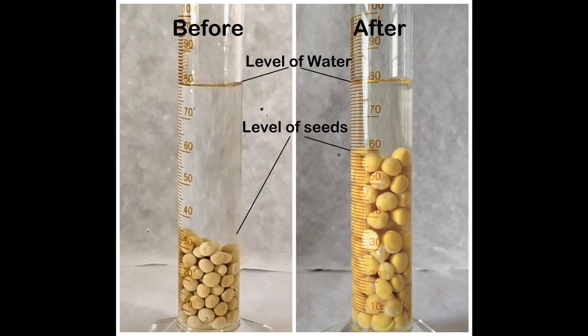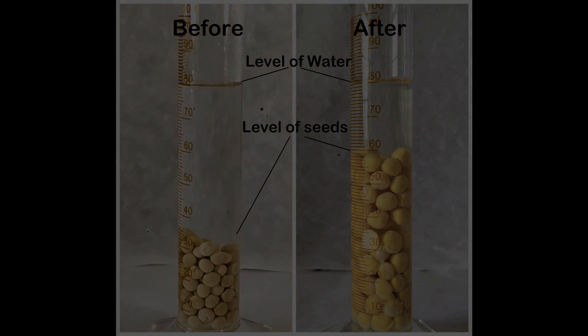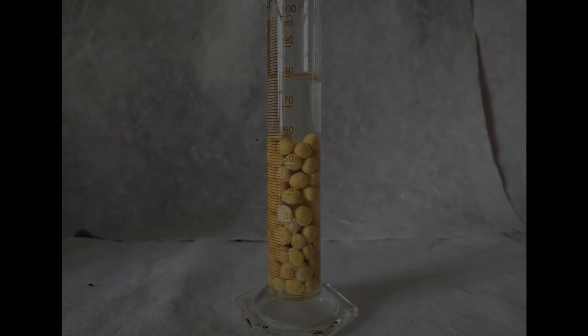This shows that the dry seeds began absorbing the water in the cylinder to eventually increase in size and volume. However much water has been absorbed by the seeds is reflected by corresponding decrease in the volume of water in the cylinder and vice versa. This simple experiment demonstrates the phenomenon of imbibition in seeds.